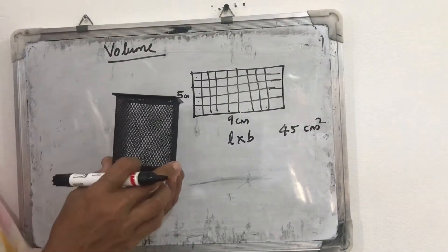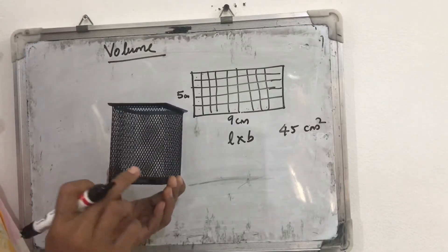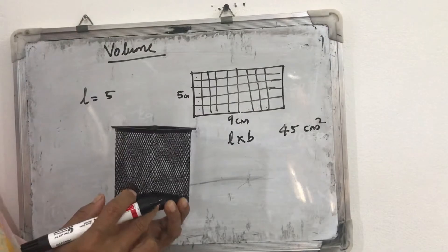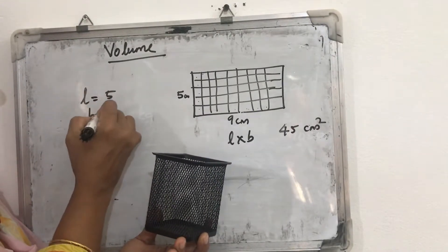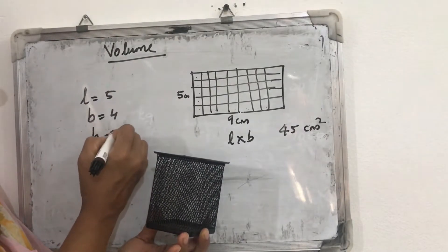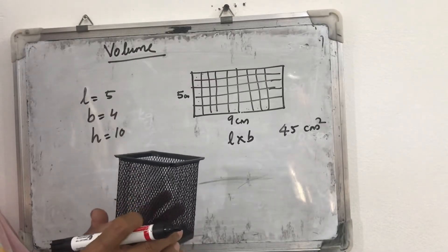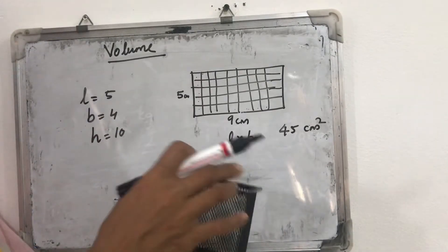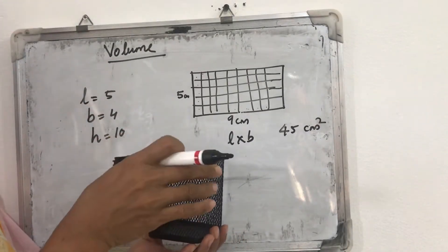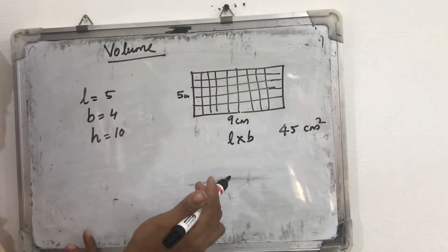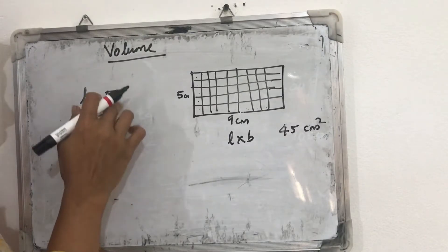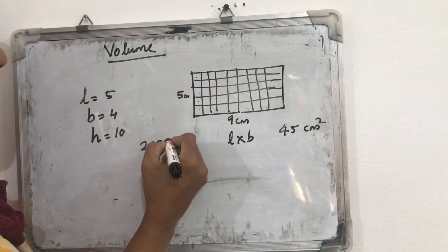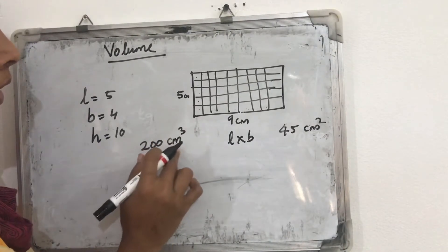For example, in a cuboid, if lengthwise five unit cubes are arranged, the length is five; breadthwise four unit cubes are arranged, the breadth is four; and the height is ten. So total unit cubes = 5 × 4 × 10 = 200. The volume of this cuboid is 200 cubic centimeters.